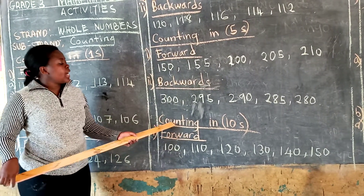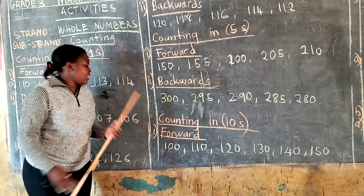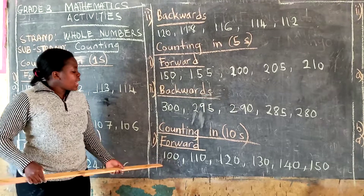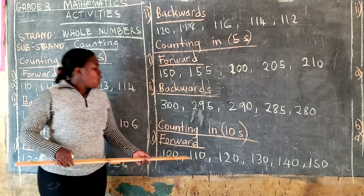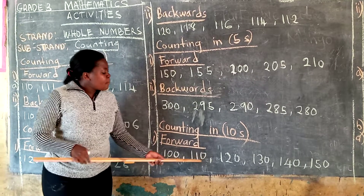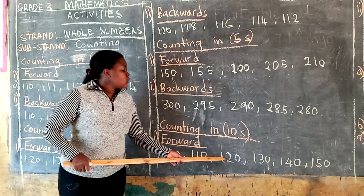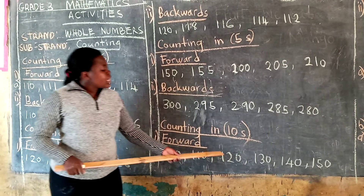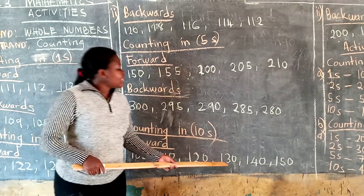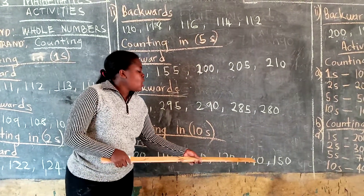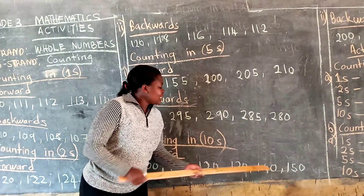Now we are counting in tens, forward. You add 10. So 100 plus 10, you will get 110. 110 plus 10, remember you are moving forward, you get 120. 120 plus 10, you get 130. 130 plus 10, you get 140. 140 plus 10, you get 150.